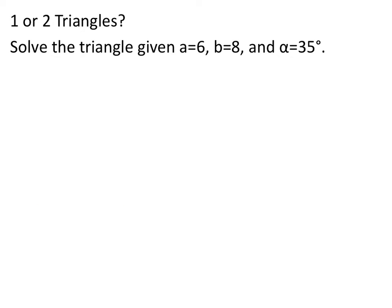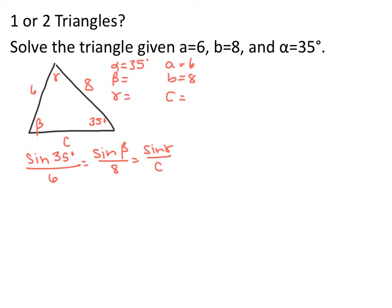So now the question is, how do we know whether we have one triangle or two triangles? Here we have some given information: side lengths of 6 and 8, and an angle of 35 degrees. Pause the video, draw your triangle, write out your given information and your law of sines ratios. Angle 35 degrees should be across from side length 6, beta across from 8, and gamma across from c.